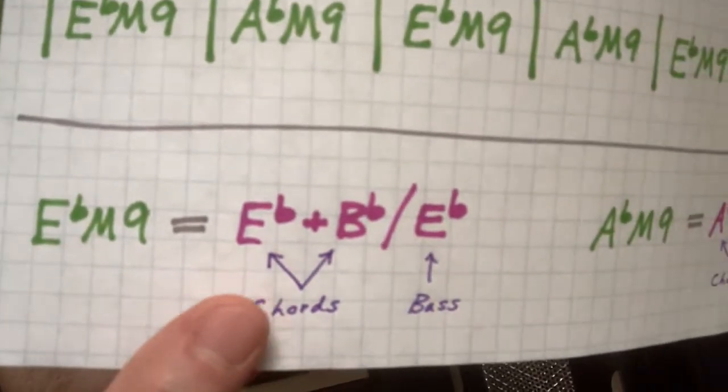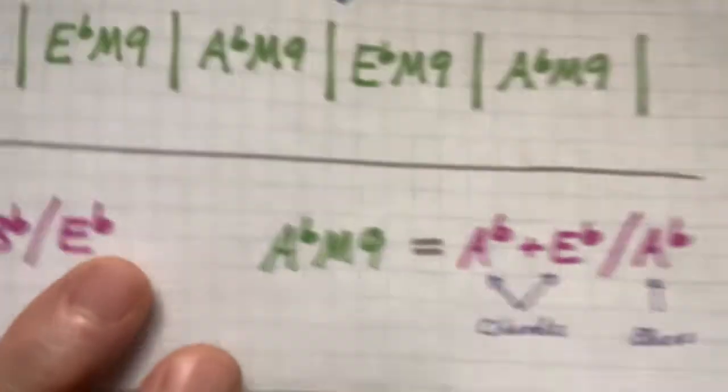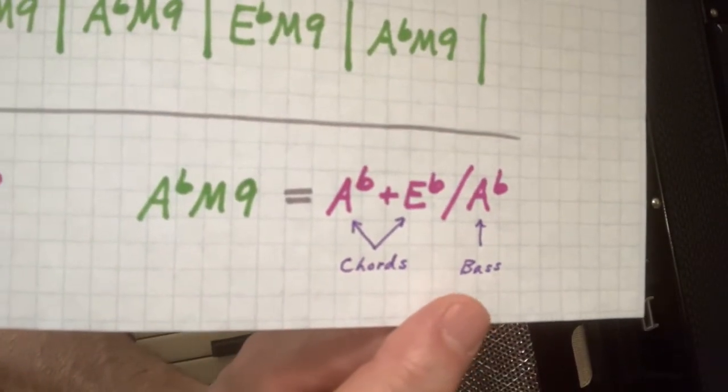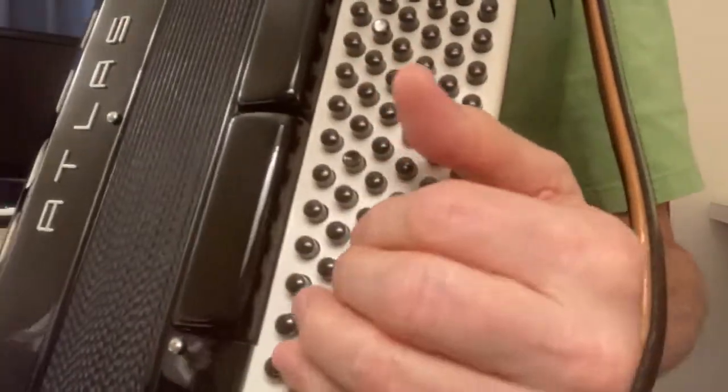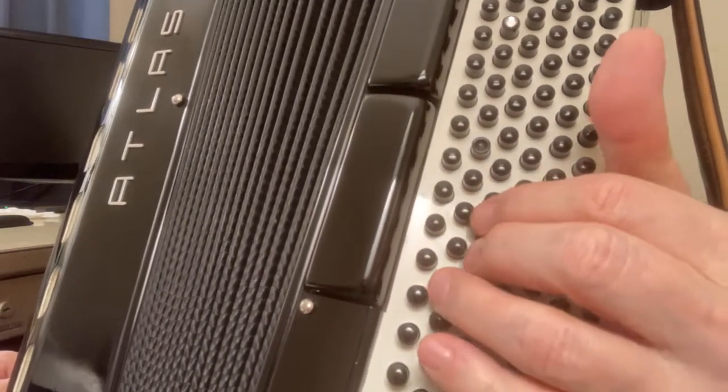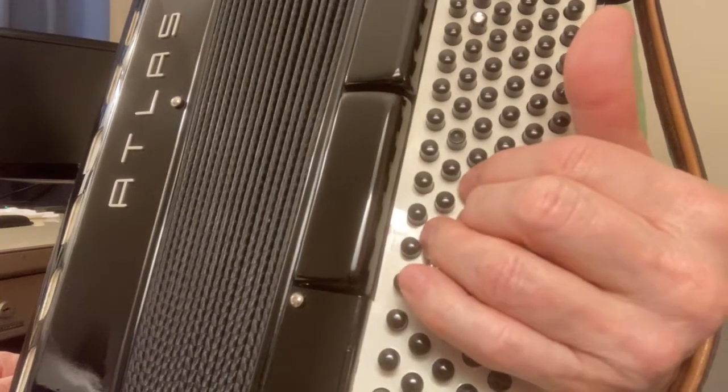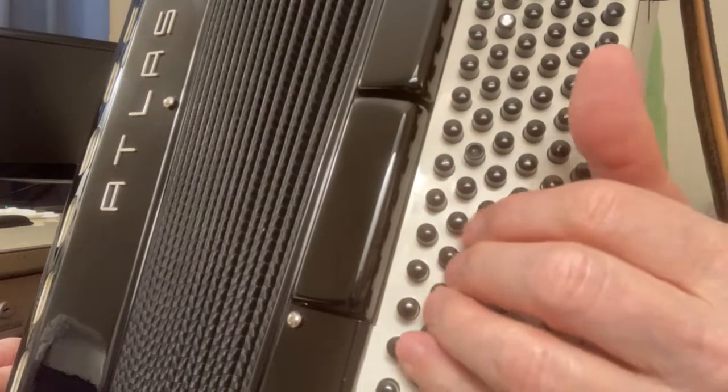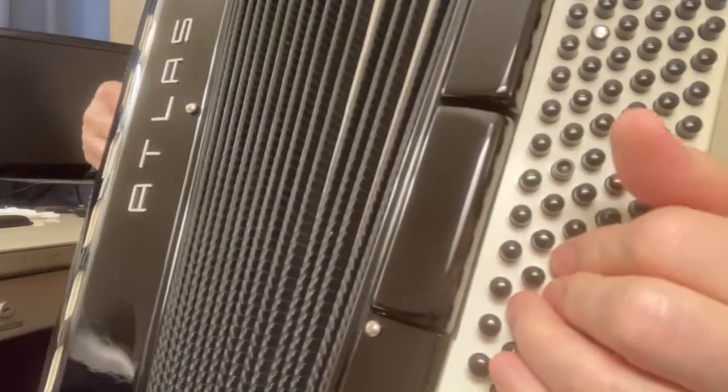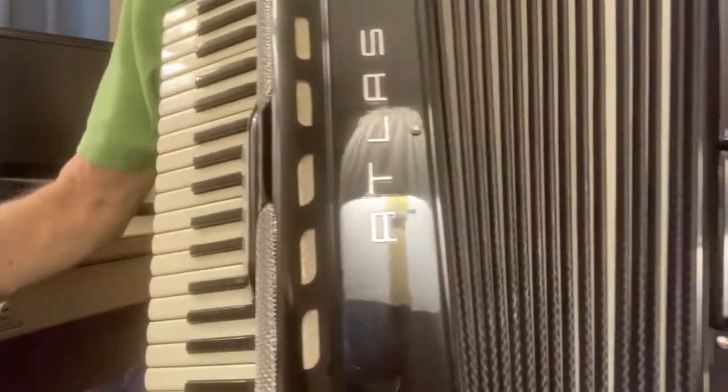Here's how you play the E flat major nine. It's the E flat and B flat chord buttons with the E flat bass button. And the A flat major nine is the A flat and E flat chord buttons with the A flat bass button. And that goes like this. Here's the E flat major nine, and you add the B flat chord button. And the A flat major nine is the A flat major, and you add the E flat major chord button. Very sweet. These are sweet chords. That's very sweet, very beautiful.